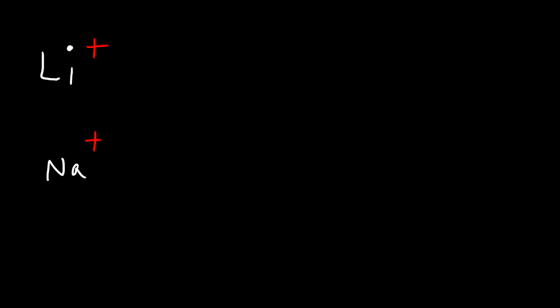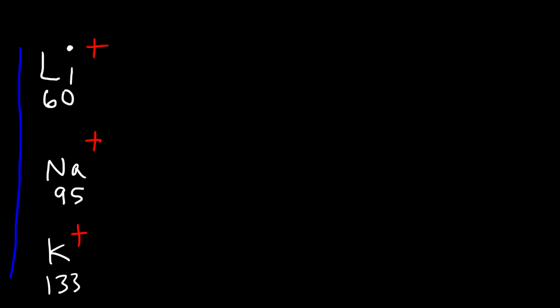Ionic radii follows the same trend as atomic radii. The ions get bigger as you go down. For example, the lithium plus ion is about 60 picometers, the sodium plus cation is 95, and potassium is 133. So as you can see, as you go down, the sizes of the ions increase. Sodium is a bigger ion than lithium.